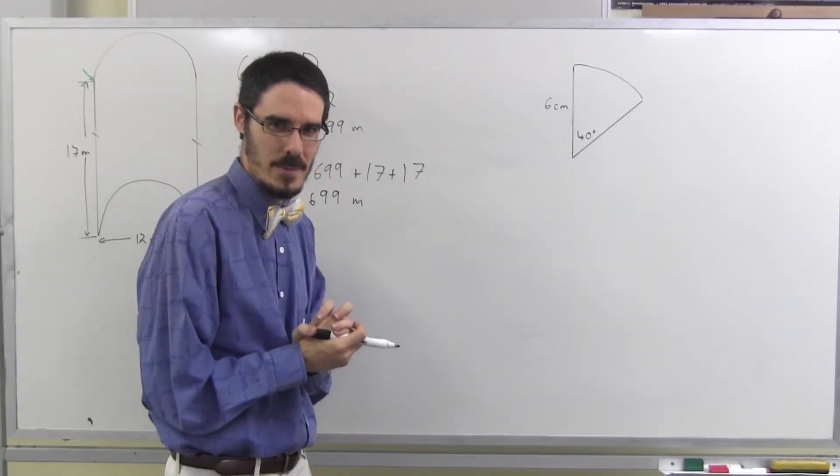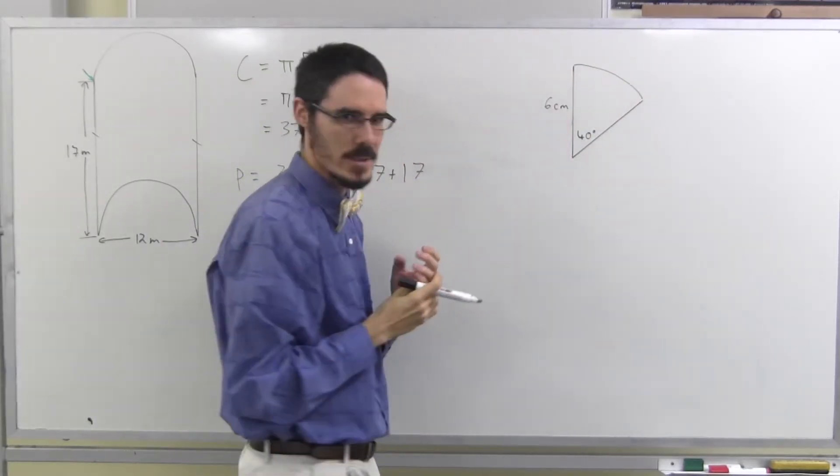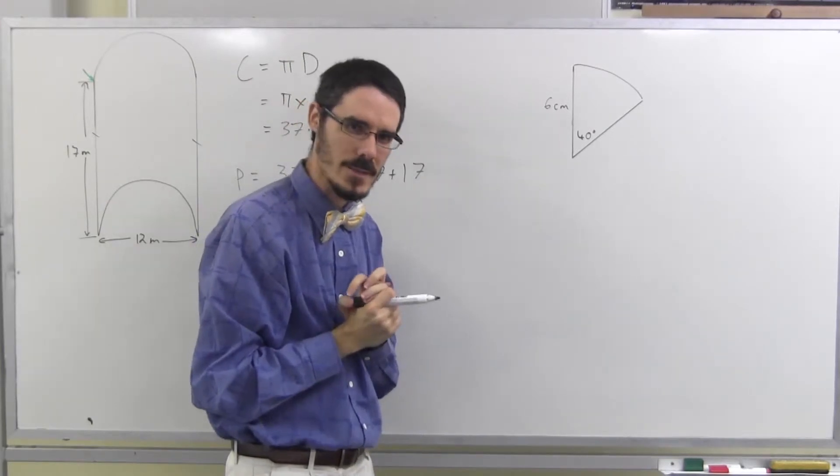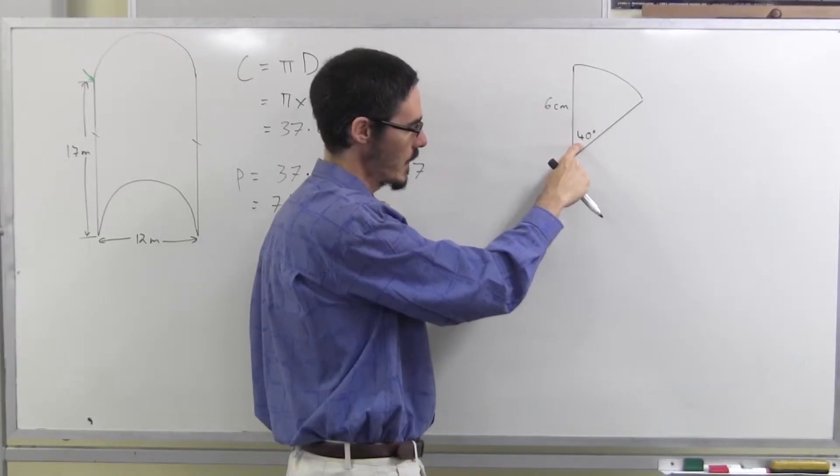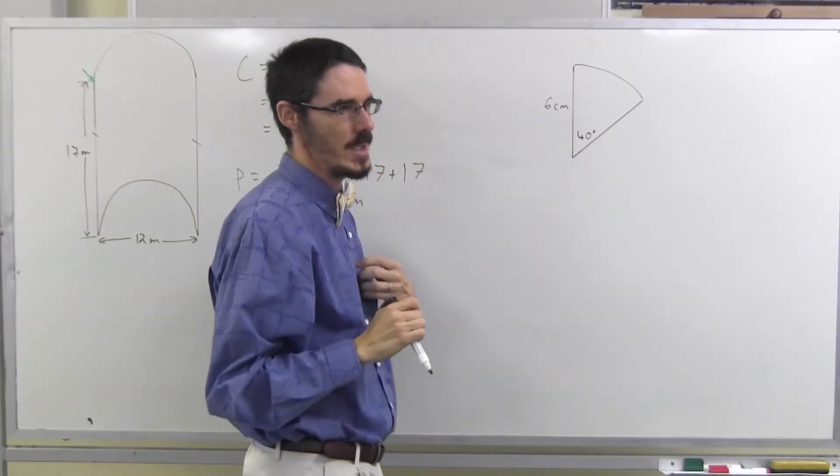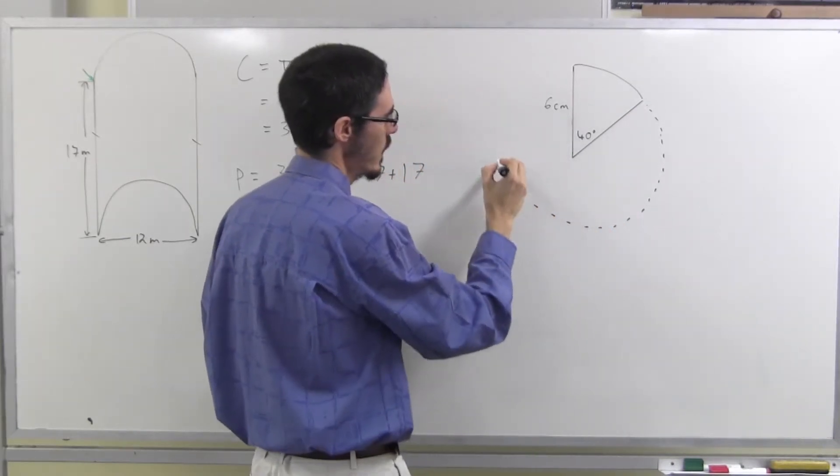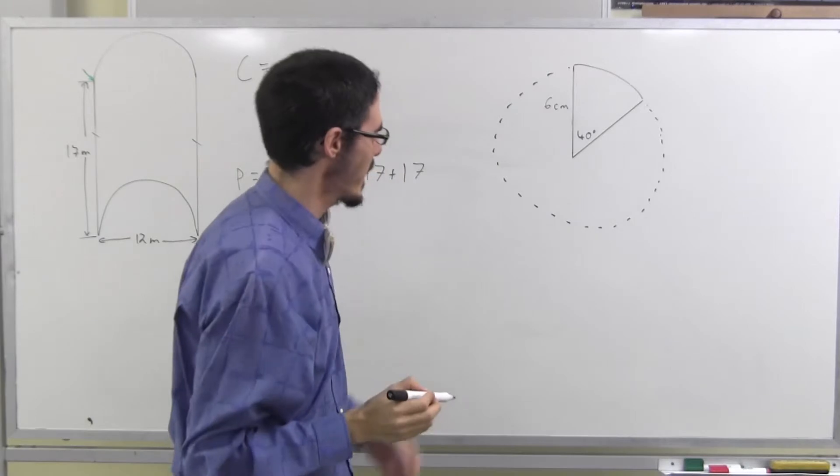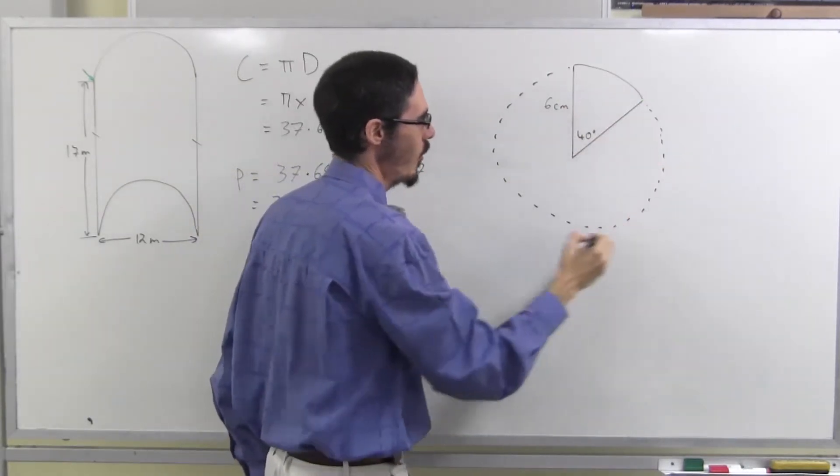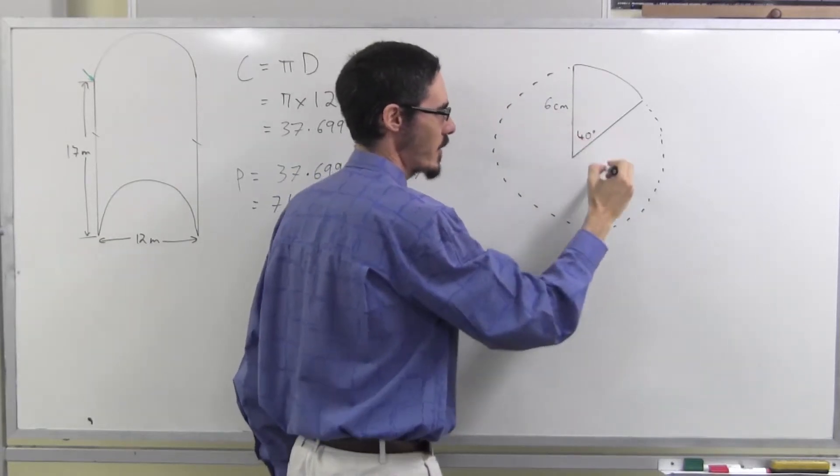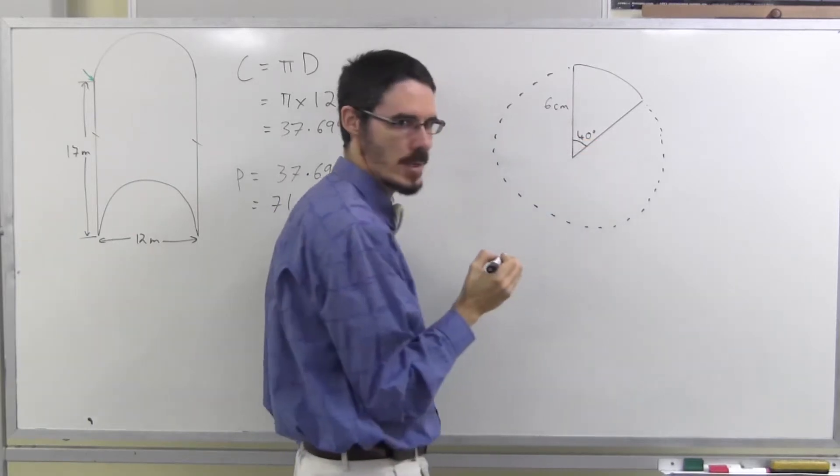Now, this one's a bit different. I don't have a whole circle. I've only got a small section of a circle. How much of a circle have I got? 40 degrees. 40 degrees. How many degrees would there be if it was a whole circle? That doesn't look very circular, does it? Good enough for this diagram. If it was a whole circle, I would have 360 degrees. I've actually only got 40 degrees.